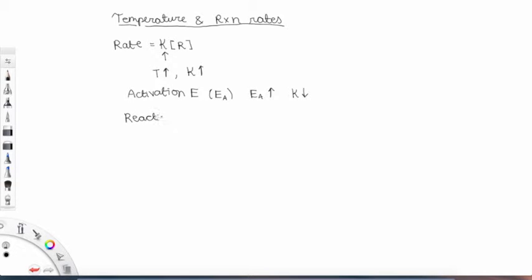So we have reactants going to some kind of transition state, which is also known as an activated complex, and this goes to products.